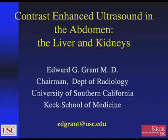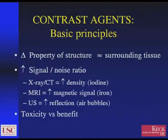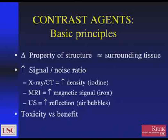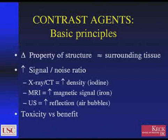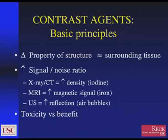I'm going to be talking about contrast-enhanced ultrasound in the abdomen with specific attention to its use in the liver and kidneys. By way of background, some basic principles about contrast agents in general: the reason we use contrast agents of any type is to change the property of a specific structure with regard to surrounding tissue such that it stands out better, or we are able to see it at all. One of the other important principles is that they tend to increase the signal-to-noise ratio of the specific structure we're looking to image.